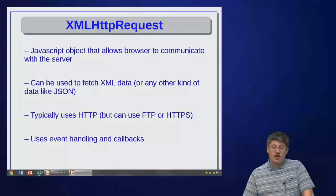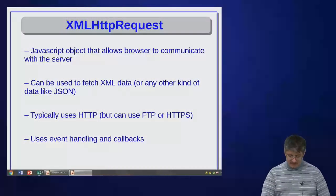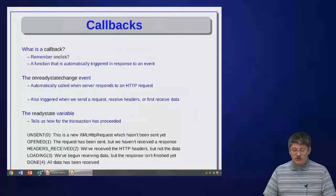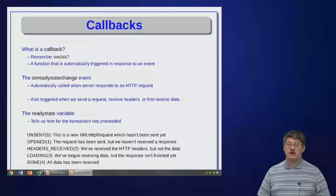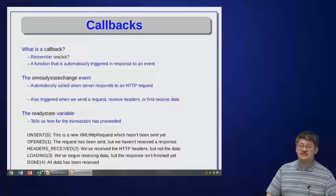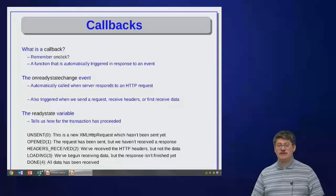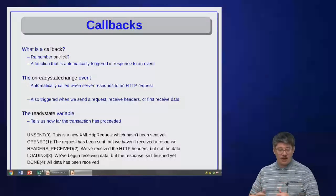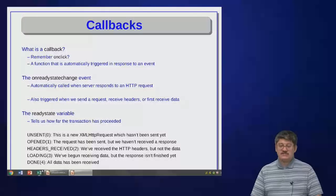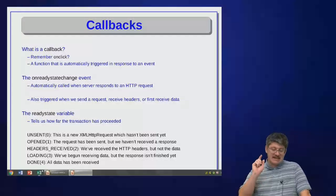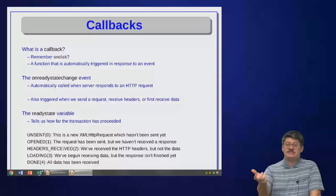It's going to use event handling callbacks in order to process that data when it comes in. A callback — like onClick — is just a function that's automatically triggered when some event occurs. Every XMLHttpRequest object has a special property called the onReadyStateChange event. It's automatically called whenever the server receives a response to an HTTP request. So we send an HTTP request, and when we receive a response, onReadyStateChange gets triggered.